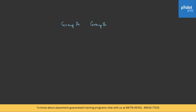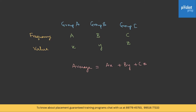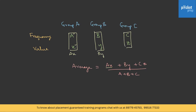This is the final lecture on weighted averages. If three groups A, B, C have a number of items, b number of items, and c number of items, with respective values x, y, and z, then the weighted average = (a×x + b×y + c×z) / (a + b + c). This works because a×x represents the total value for group A, and so on.